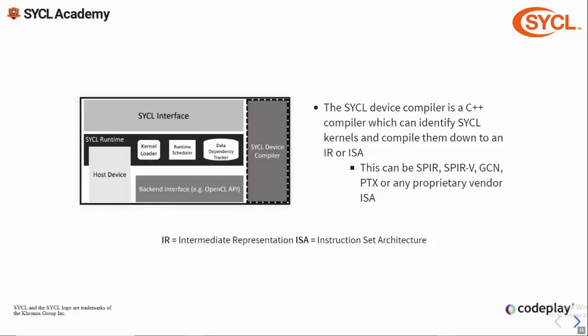Finally we have the device compiler. The SYCL device compiler is a standard C++ compiler which can parse and compile SYCL kernel functions and integrate with the SYCL runtime. The SYCL device compiler will output kernels in some binary format that can be consumed by a backend. This is often a standard IR such as SPIR or SPIR-V, but can also be a proprietary IR like PTX, or an ISA for a particular architecture.